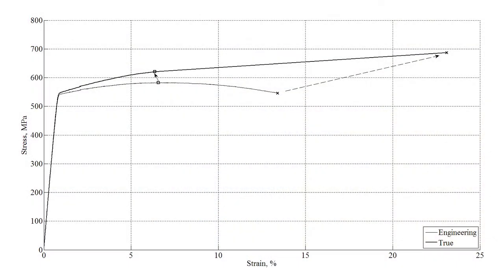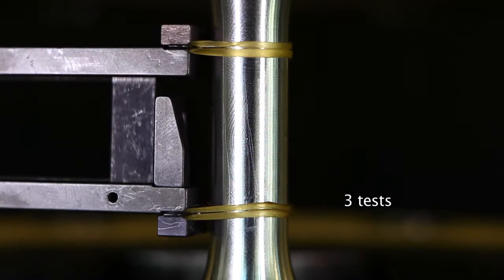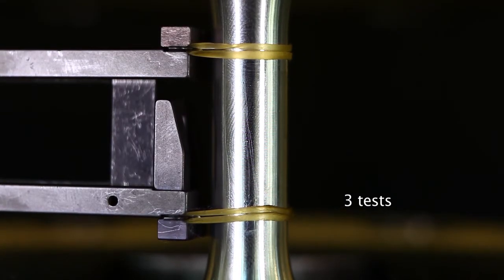The engineering curve from load and displacement as measured by the machine can then be converted into the true stress-strain curve. Obviously tests need to be repeated to evaluate material property scatter.